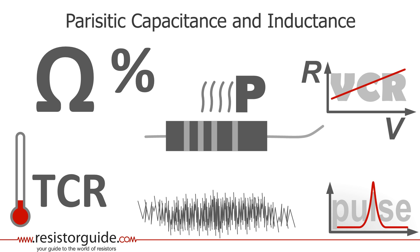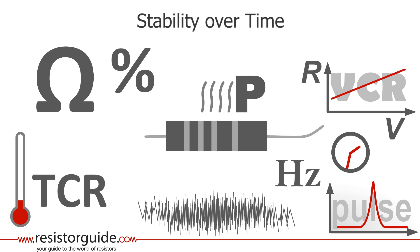Parasitic inductance and capacitance are unwanted effects in resistors that show up at high frequencies. Stability - over time the resistance value will drift. This is dependent on the resistor type and also on the load conditions.